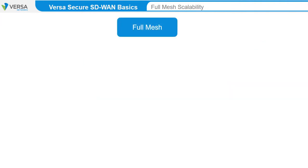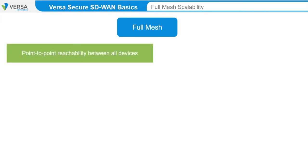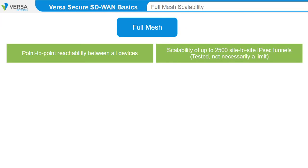Full Mesh topologies provide point-to-point reachability between all devices. The configuration for Full Mesh SD-WAN is simple, and the Versa Network solution provides scalability of up to 2,500 tested site-to-site IPSec tunnels.